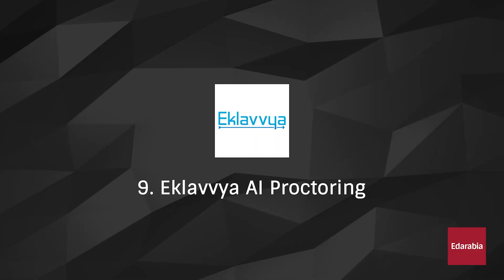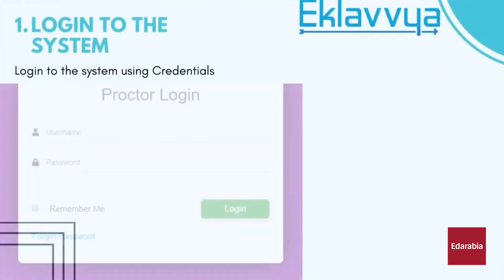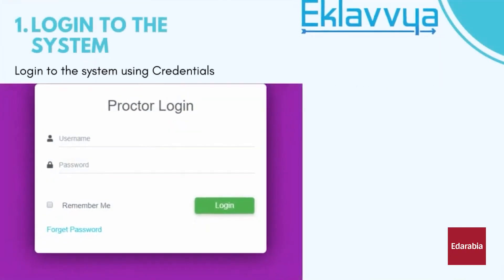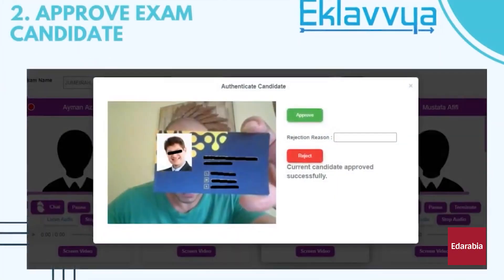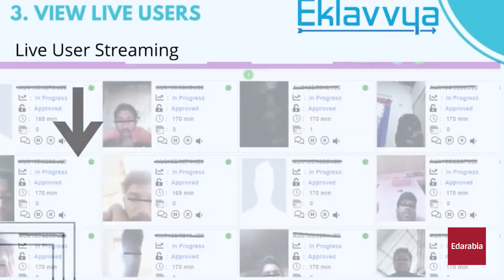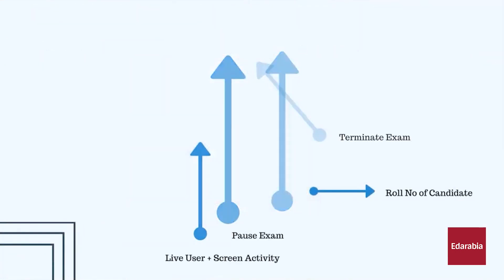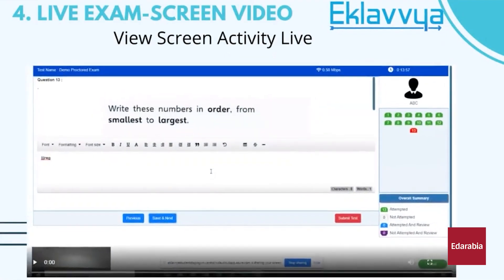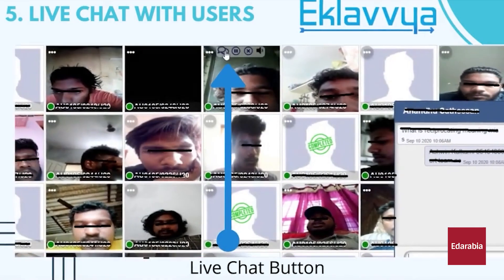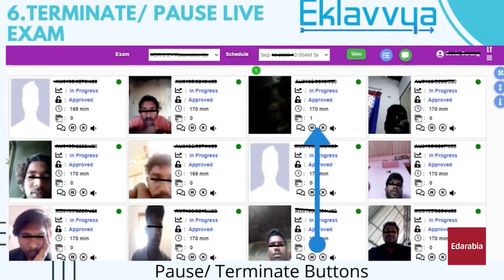Number 9: Eclavia AI Proctoring. This AI tool ensures exam integrity by monitoring students' online assessments using webcam-based AI proctoring, enhancing the rigor of online tests and deterring academic dishonesty. It's a valuable resource for educational institutions seeking reliable ways to uphold the integrity of their online assessments.